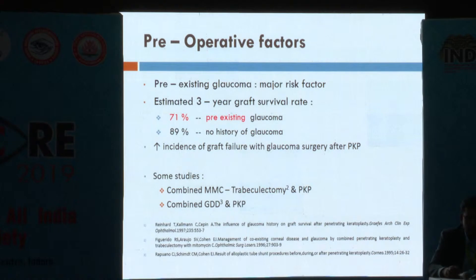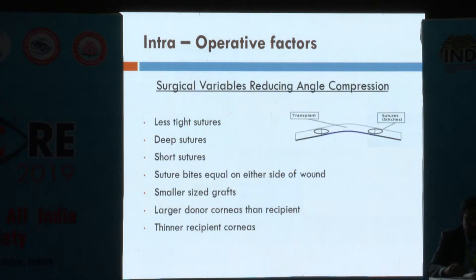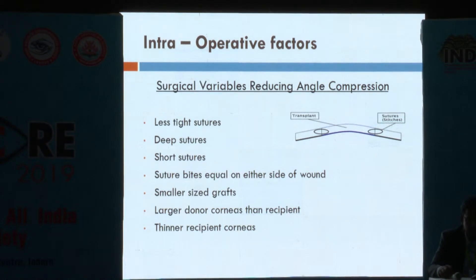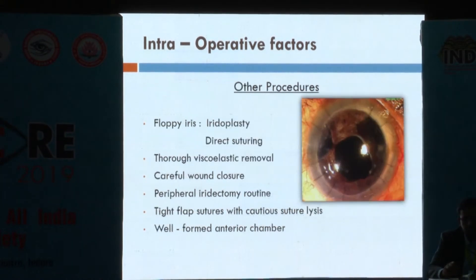There is increased incidence of graft failure with glaucoma surgery after PK. Some studies have depicted combining trabeculectomy or glaucoma drainage device with keratoplasty. Surgical variables that can be done to reduce angle compression include less tight sutures during keratoplasty, deep sutures, short sutures, equidistant sutures on either side of the wound, smaller size graft, larger donor size graft at least 0.5 to 1 mm larger, and thinner recipient cornea.